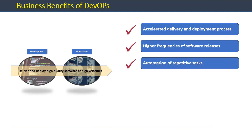Another benefit is the automation of repetitive tasks. Such a high increase in the frequency of software releases isn't possible unless various facets of the overall software delivery and deployment pipeline are fully automated. The various steps in this pipeline can include code development, integration, testing, security, validation, deployment, monitoring, and others — a number of which can be automated in an organization that institutes DevOps.